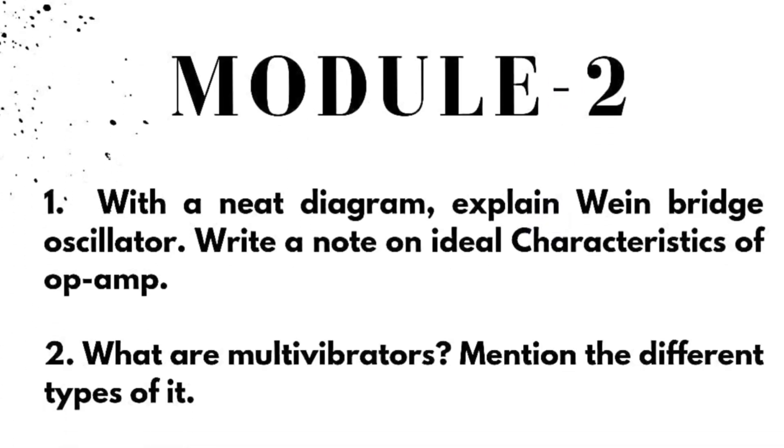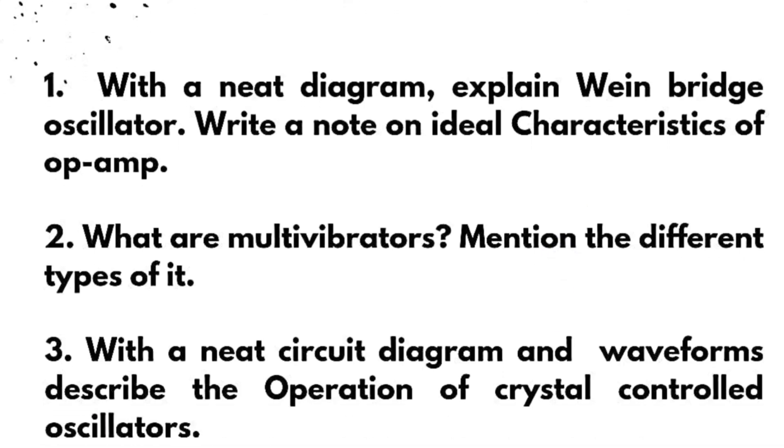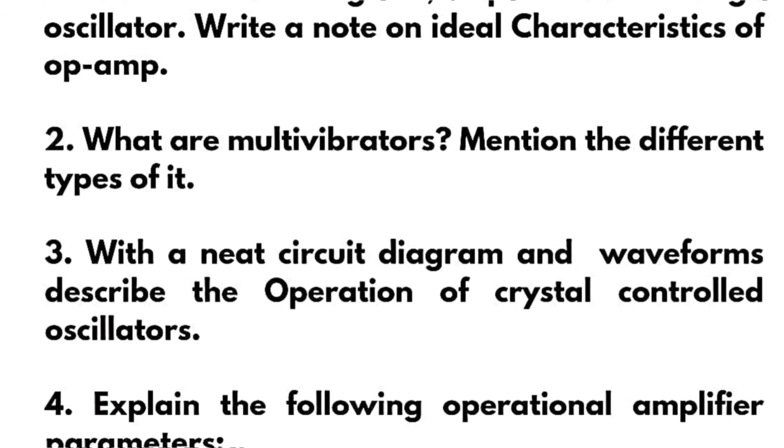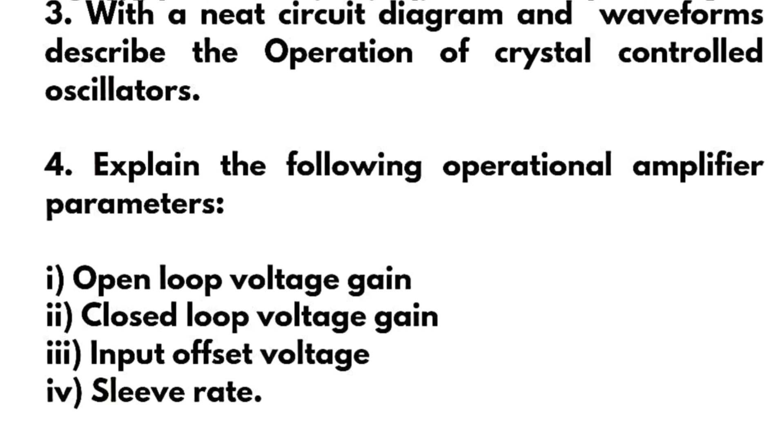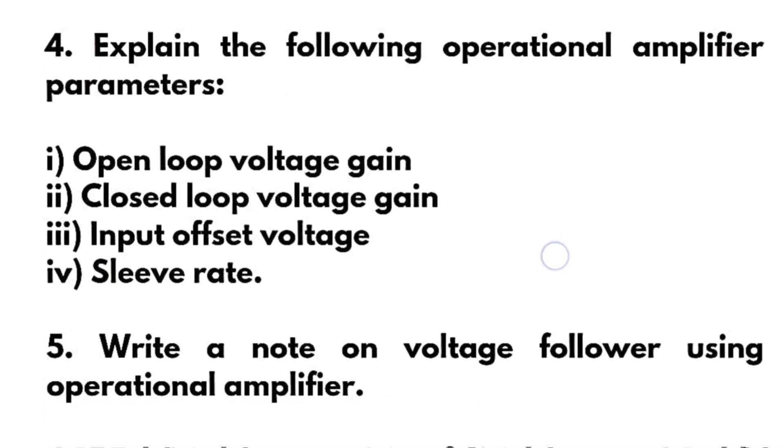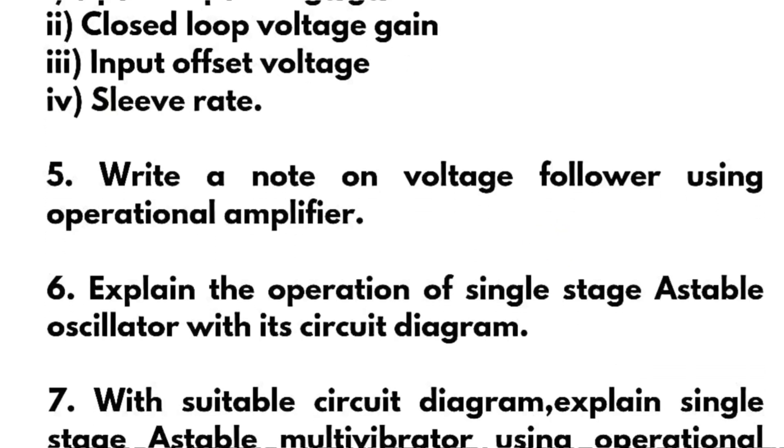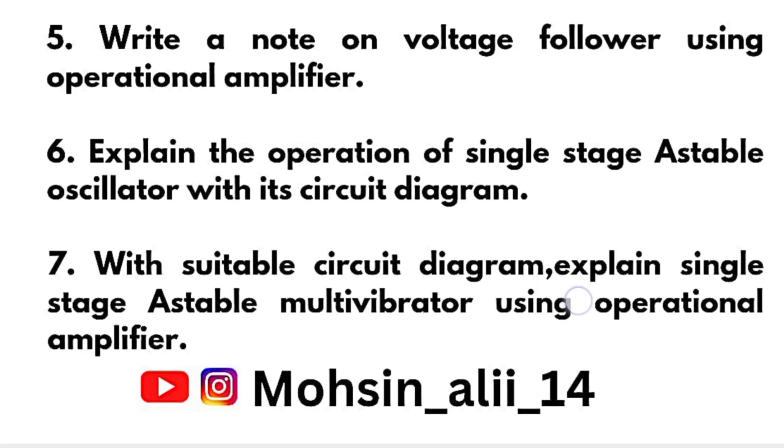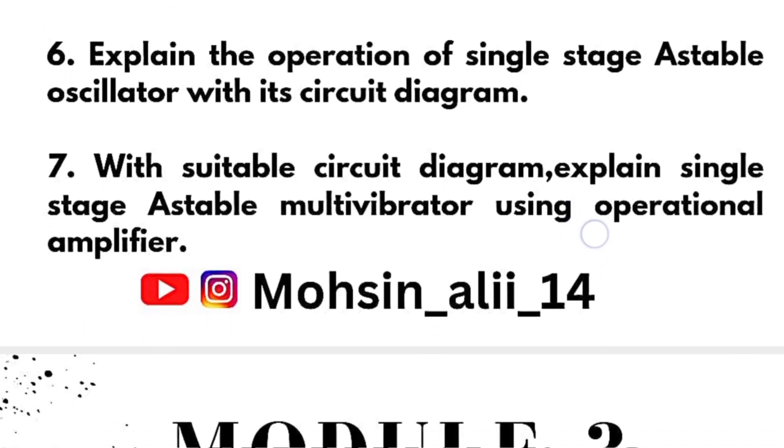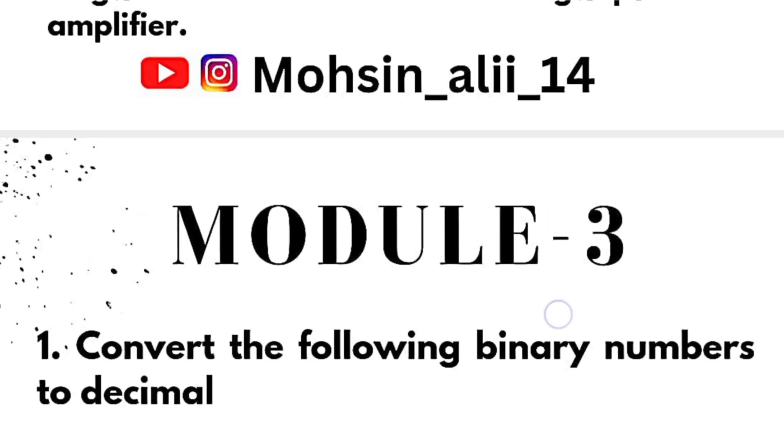Next we have module second. With a neat diagram explain Wien bridge oscillator. Write a note on ideal characteristics of op-amp - this is a super important question. What are multivibrators? Mention the different types. With a neat circuit diagram and waveforms describe the operation of crystal controlled oscillators. Explain the following operational amplifier parameters: open loop voltage gain, closed loop voltage gain, input offset voltage, and slew rate - this may be 10 marks question. Write a note on voltage follower using operational amplifier and explain the operation of a single stage astable oscillator with its circuit diagram. With suitable circuit diagram explain single stage stable multivibrator using operational amplifier. This is all about module second.